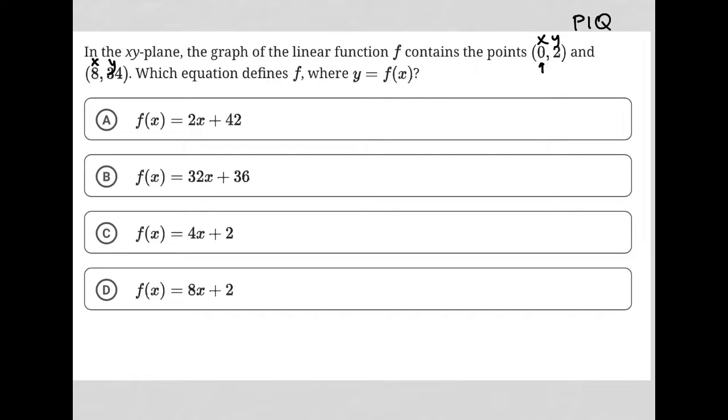Meaning that when I plug in 0 for x, I get 2 for y. When I plug in 8 for x, I get 34 for y. I'm actually going to start off doing that just because it's easier to cross some things out.